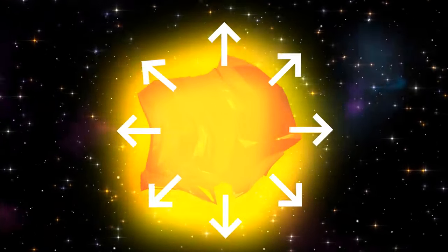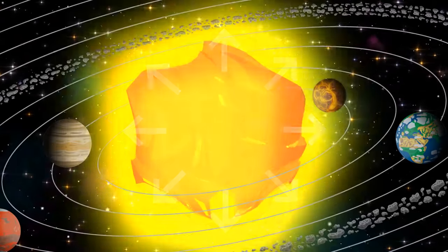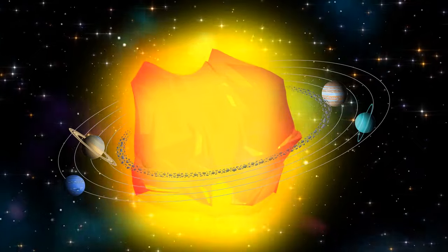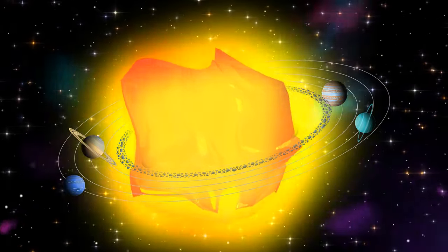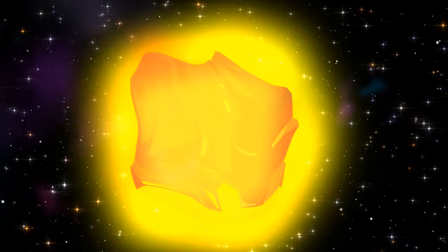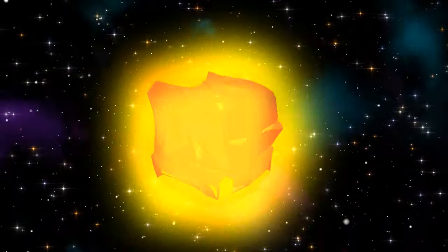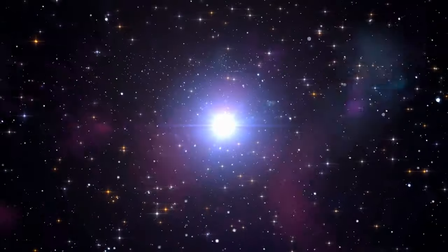That's what's happening to Betelgeuse right now. It's already so big that if you put it in the center of our solar system, its edge would touch the asteroid belt between Mars and Jupiter. Betelgeuse will continue to expand until it exhausts its fuel completely. Then the gravity will win, the star will shrink in size, and then an enormous boom will happen.